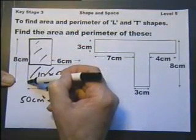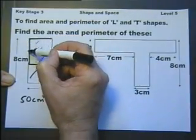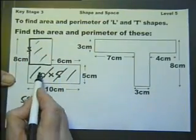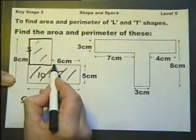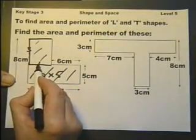If the whole of that is 8 and that is 5, then this bit here must be 3. If the whole of this is 10 and this part is 6, this must be 4.